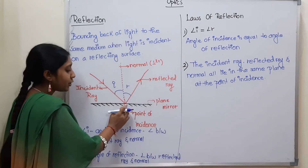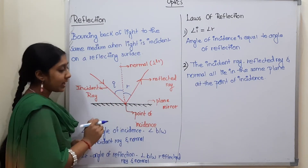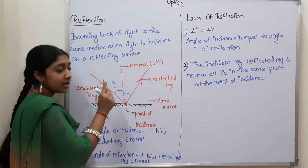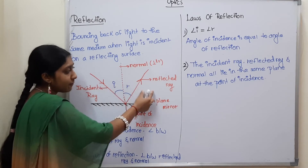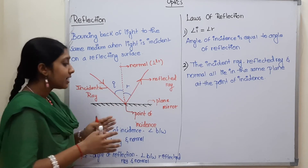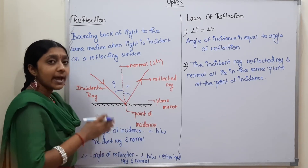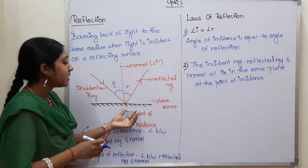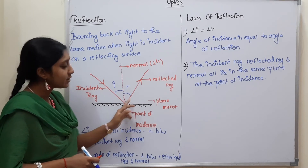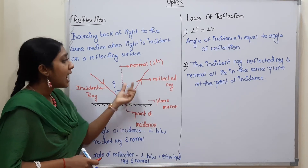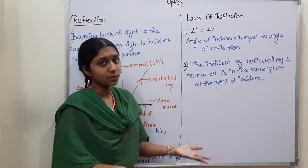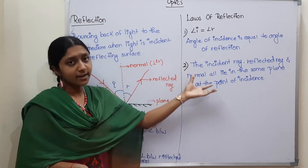At the point of incidence, the incident ray is here, the reflected ray is here, and the normal is here — all lying in the same plane. This is the second law of reflection. So we have the diagram and the two laws of reflection.